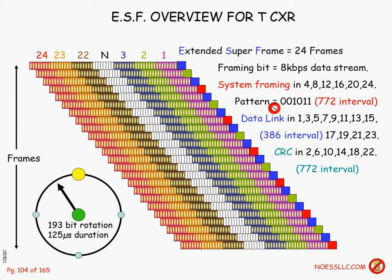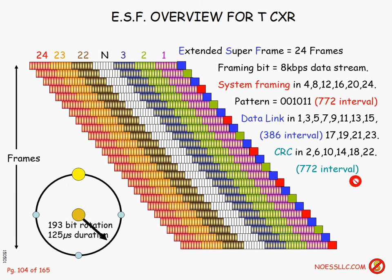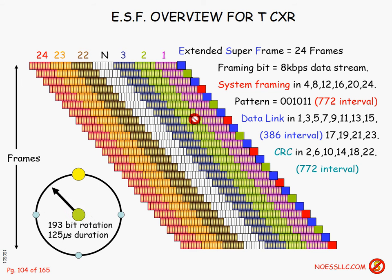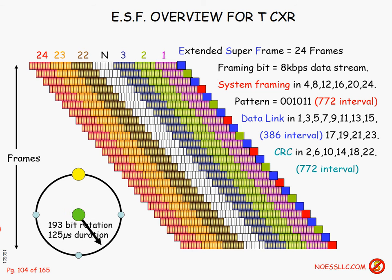Because ESF is such a better system, this single framing bit can also function as a system-level data link to send little messages back and forth from the transmitter to the receiver — customers never see this. It occurs in frame positions one, three, five, seven, nine, and so on through twenty-three. ESF can also send a cyclic redundancy check (CRC) so the receiver can determine if there were any errors in the complete transmission. In T-type systems, you never retransmit a frame, but you can tell the health of the system by that CRC.